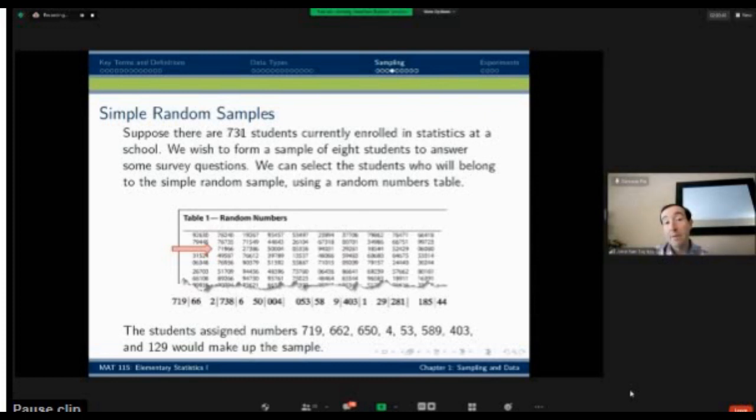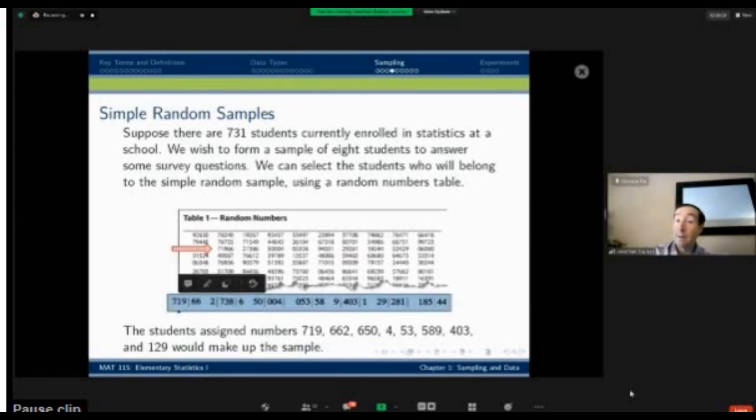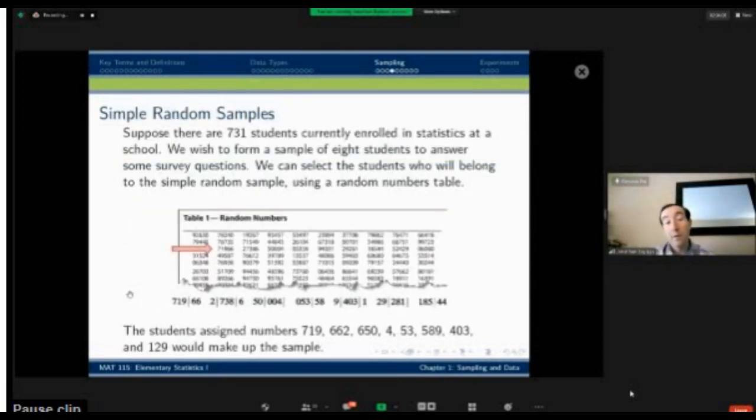We can select the students who belong to the simple random sample using a random number table. So this is a table here that's been produced of random five-digit numbers. What we do is we have 731 students. So we're going to look for numbers that are between 1 and 731. So I will read off the first three digits. I'll start a random place in here, and I will read off the first three numbers, 719. And I block those off. So it looks like I'm going to take my first number of the sample is student number 719 in that list.